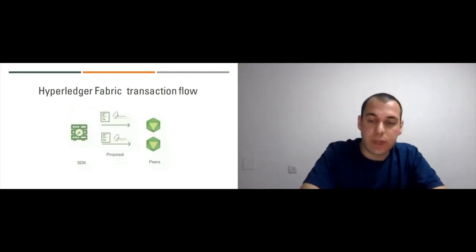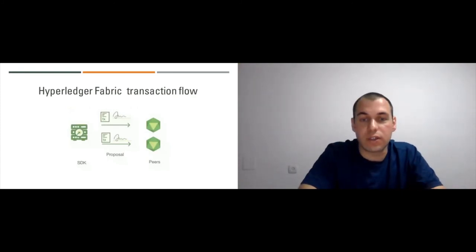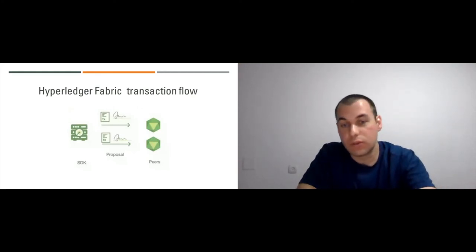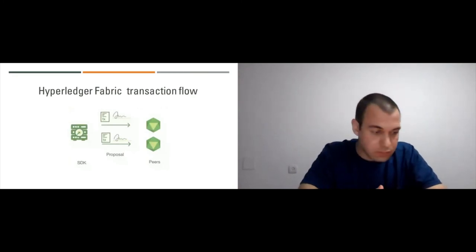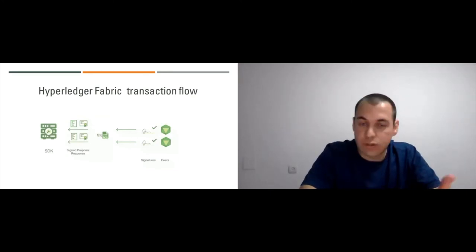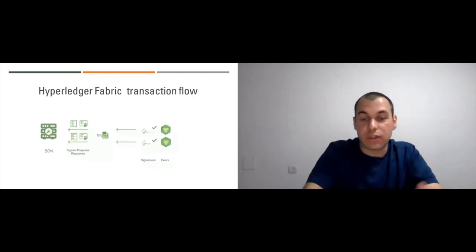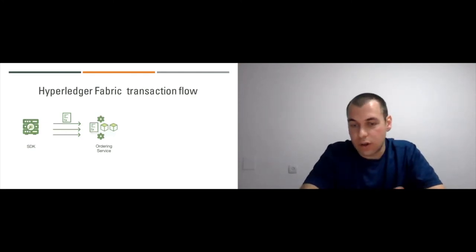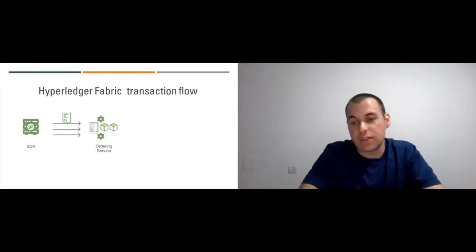Let's briefly go over the Fabric architecture. You have an SDK embedded within an application, which sends transaction proposals to peers. A transaction proposal conveys an intent — what you are going to do — to the peers. Peers execute the smart contracts and return a signed proposal response: an endorsement. The SDK collects these endorsements, stitches them together, creates a transaction, signs it, and sends it to the ordering service.